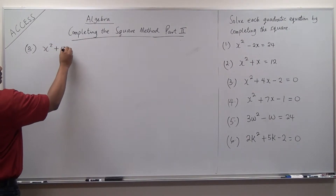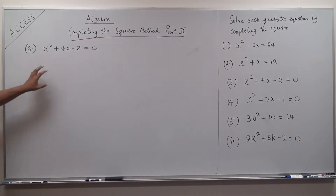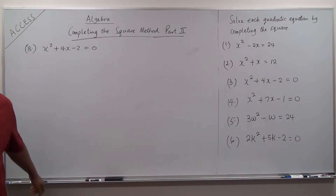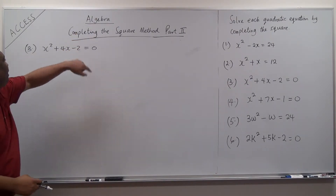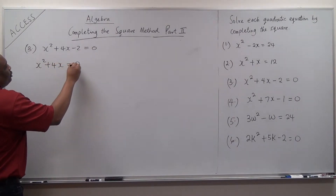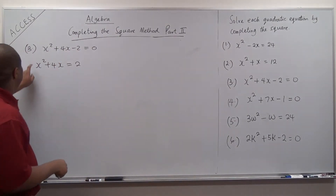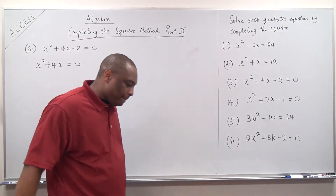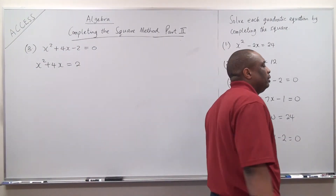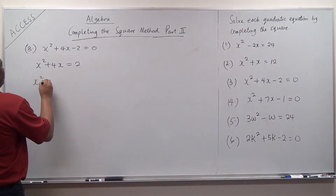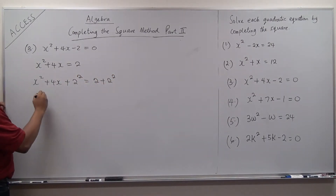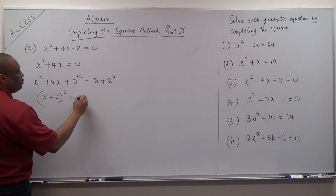We have x squared plus 4x minus 2 equal to 0. This doesn't look like the form we've been using. We've got to put it in that form. We move the constant: x squared plus 4x is equal to 2. So it looks like this and it's still x squared — we're good. What do we have to add? The coefficient of x is 4. One half of it is 2. Then square 2. So this would be x squared plus 4x plus 2 squared equal to 2 plus 2 squared. This is x plus 2 all squared equal to 2 plus 4.